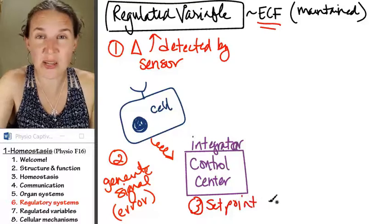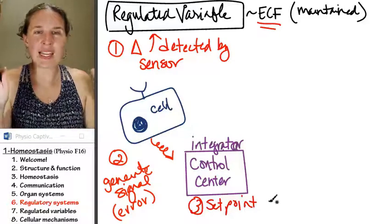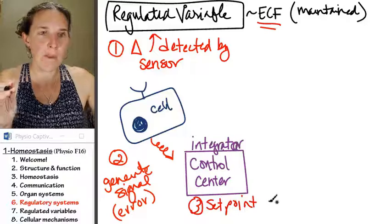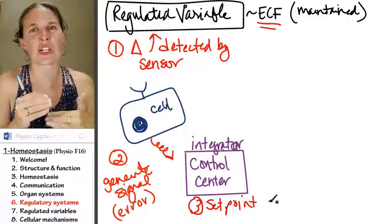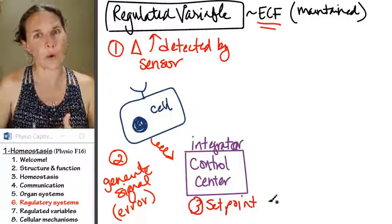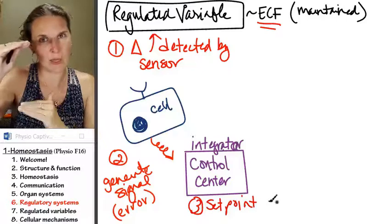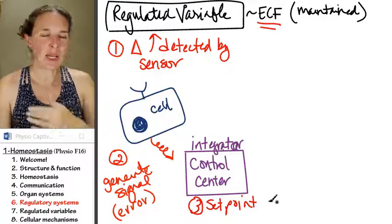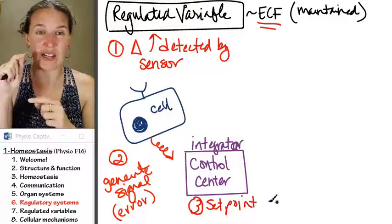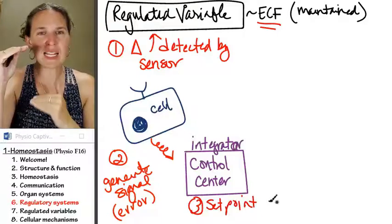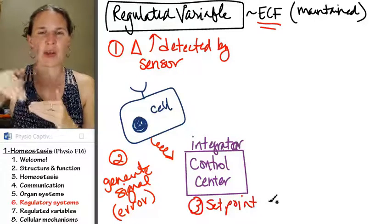The integrator has to have a set point. So the error message comes in. The integrator has to have a way of saying, okay, that temperature is a little bit low from my set point. Set point implies that it's one number. It's a range.